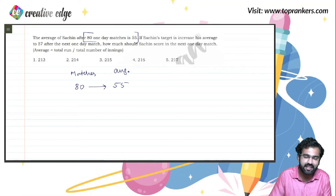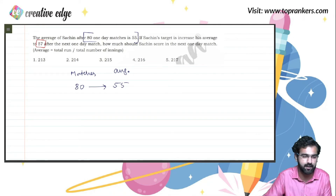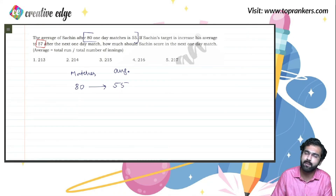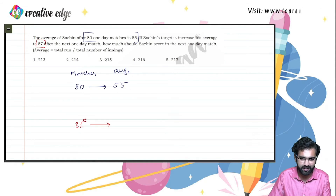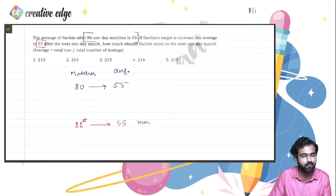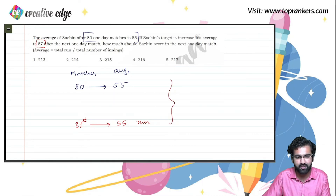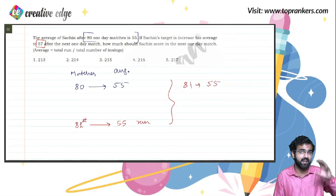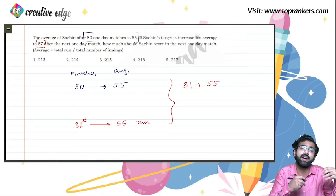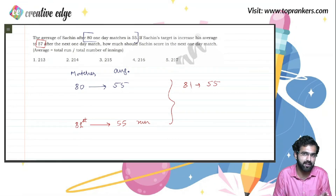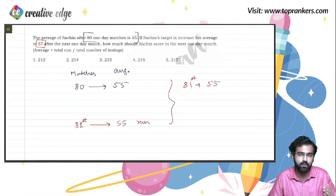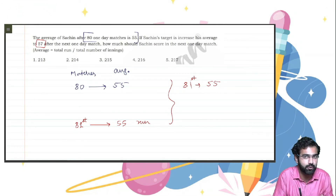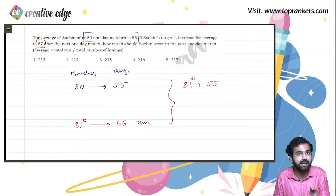If he had scored exactly 55 runs in the 81st match — equal to the existing average — his average would have remained 55. We already know that adding an observation equal to the existing average keeps the average unchanged. But he doesn't want to maintain 55; he wants to take his average to 57.